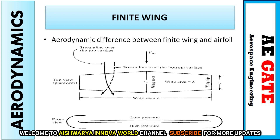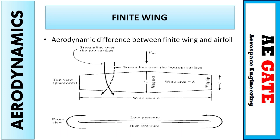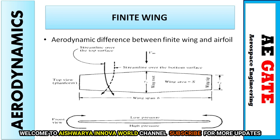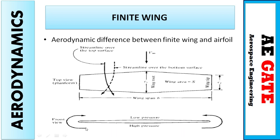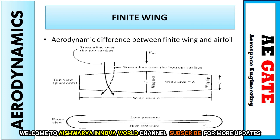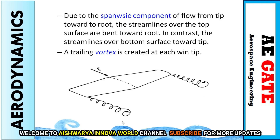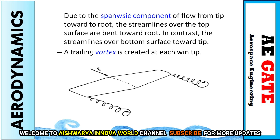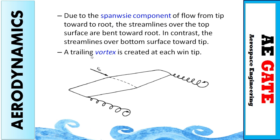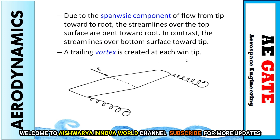Due to this pressure difference and imbalance, the flow near the wing tip tends to curl on both sides. The difference in pressure leads to trailing vortices at the tip of the wing, which can also be called circulation. Due to the spanwise component of flow from tip to root, it causes streamlines over the top surface to bend towards the root, resulting in trailing edge vortices at the tip.